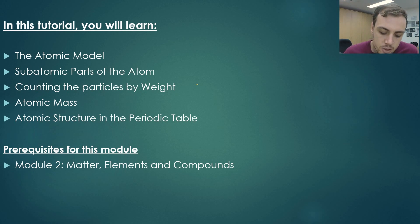We're going to have a look today at the atomic model. We're going to look at the subatomic parts of an atom and what they do. We're going to look at counting these particles by weight and then look at the atomic mass and how the atomic structure can relate into the periodic table.